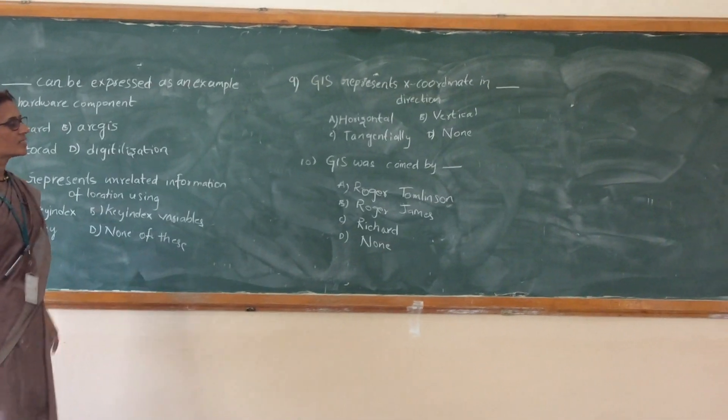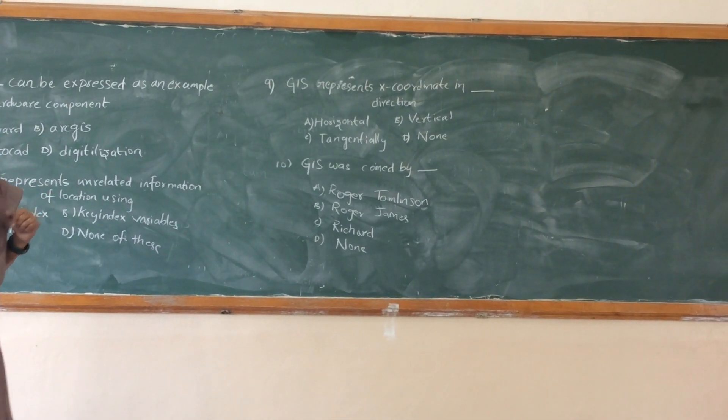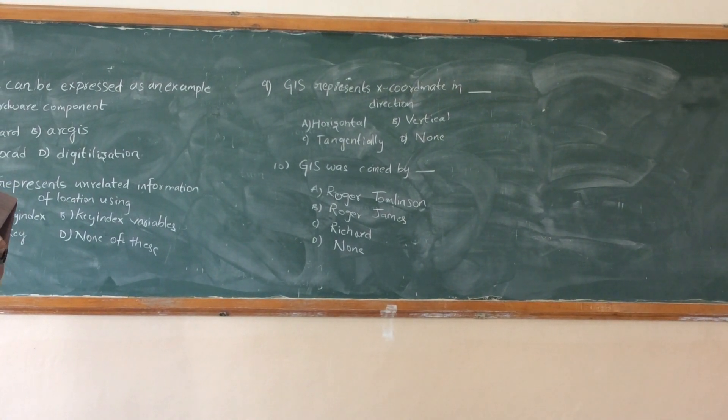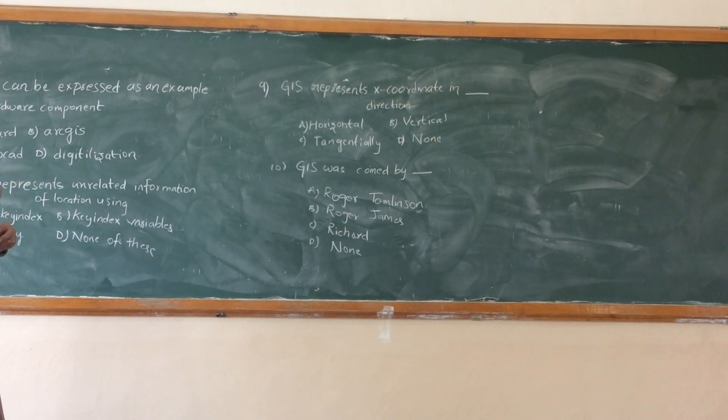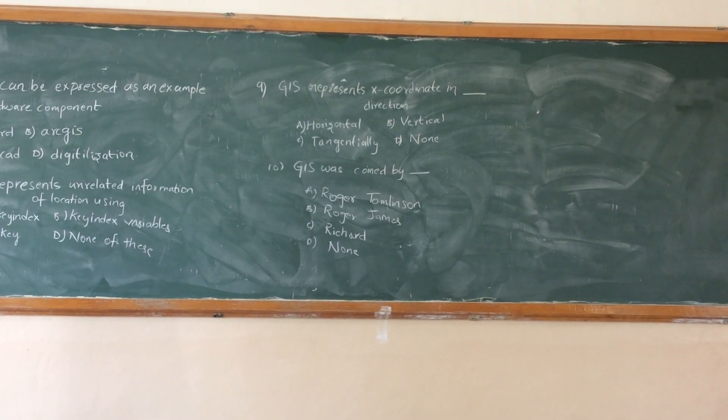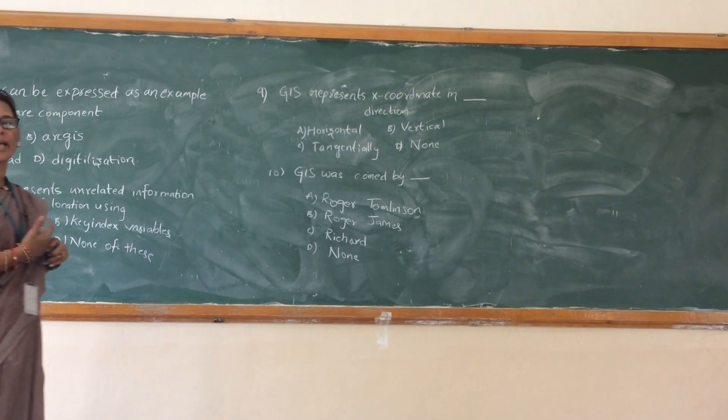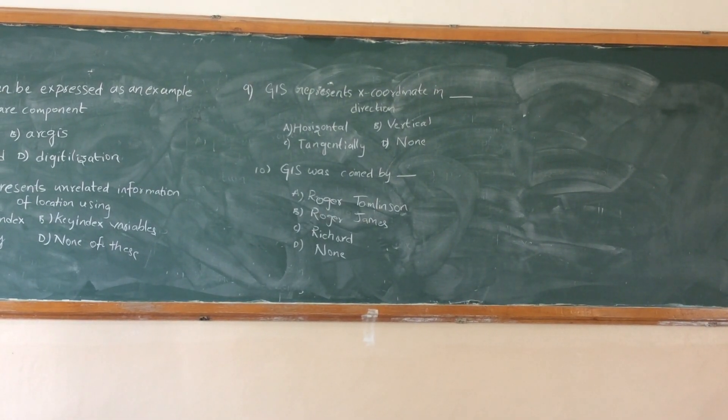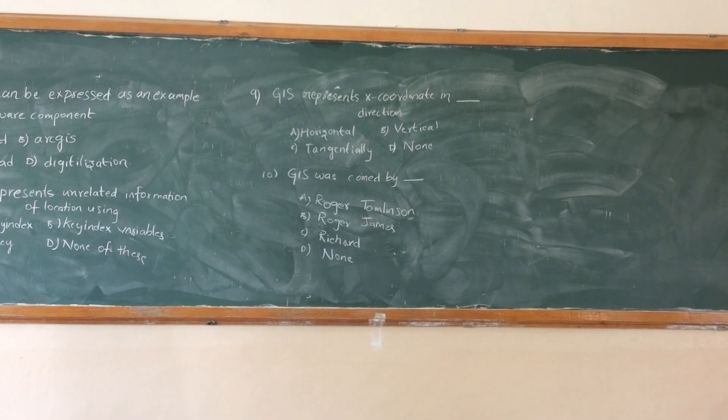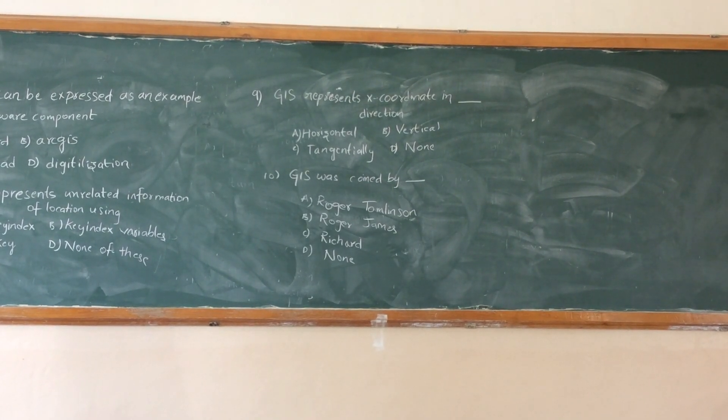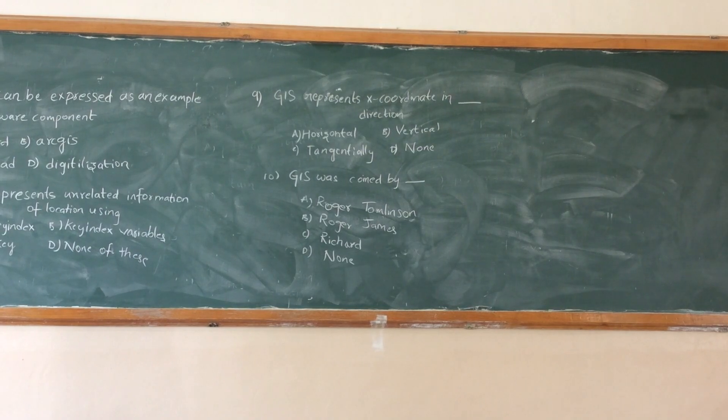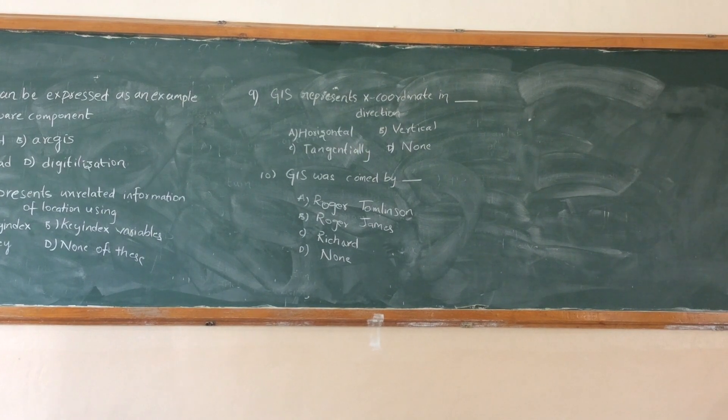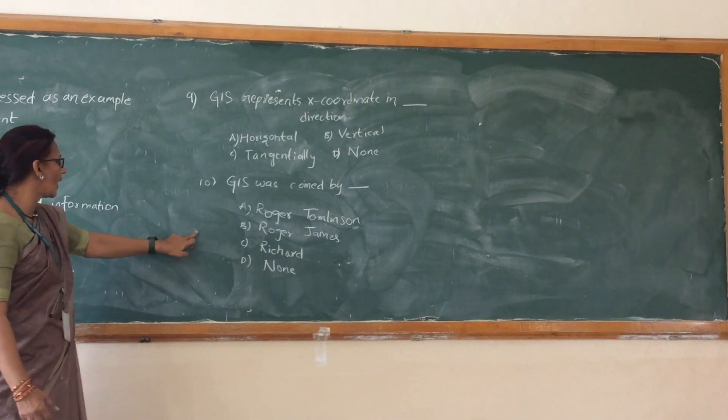Ninth one. This represents X coordinate dash direction. You know you have two coordinates. One is the X coordinate and then the Y coordinate. Whether it is which direction? Horizontal direction, vertical direction or tangent shear direction or none of it. Vertical direction will be X coordinate and then horizontal coordinate will be? Horizontal is the correct answer. Normally you can draw like this. This one is an X and this one is a Y.